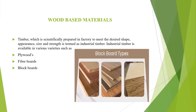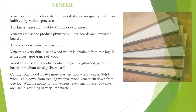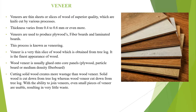Wood-based materials are developed in three categories: plywood, fiberboard, and blockboard. First we are going to see about veneer. Veneer is one of the wood-based building materials which comes in sheet form. The thickness varies from 0.4 to 0.6 mm. Veneers are used for plywood, fiberboard, and laminated boards. This product is known as a veneer and comes in sheet varieties.